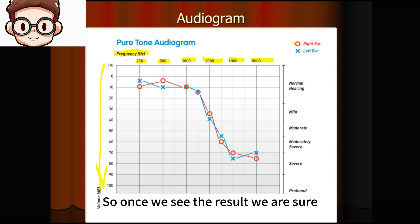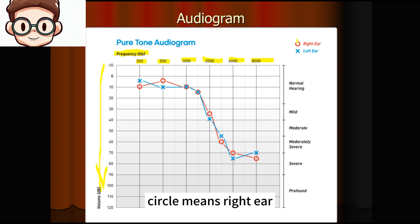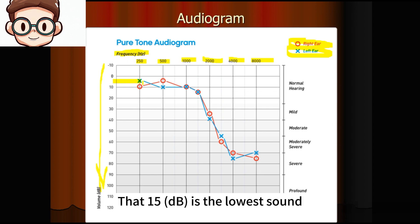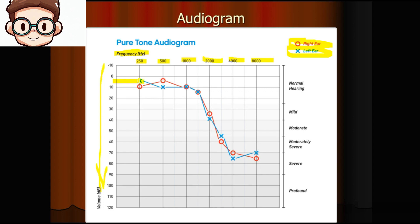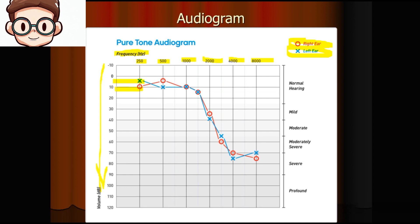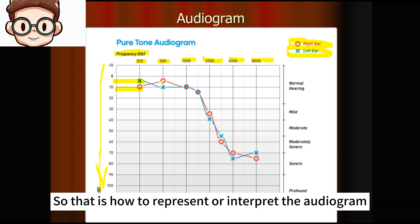Once we see the result, we should know that a circle means the right ear and a cross means the left ear. For example, in this chart, I have a hearing capability of 15 dB — that is the lowest volume I can hear on my left ear. On my right ear, the lowest I can hear is 10 dB. That's how to interpret the audiogram.